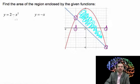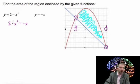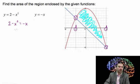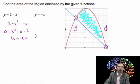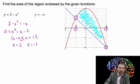Then what we do is set the two functions equal to each other. We want to know where 2 minus x squared equals negative x. Treating this as a quadratic, we move all terms to one side, preferring the x squared term to be positive. This factors to x times (x minus 2) times... giving us x equals 2 and x equals negative 1. Those are our limits of integration.